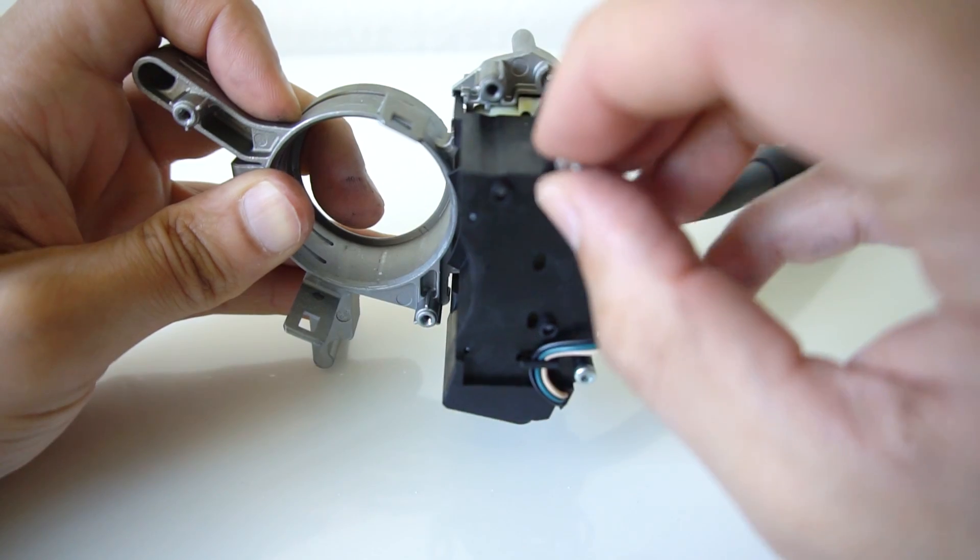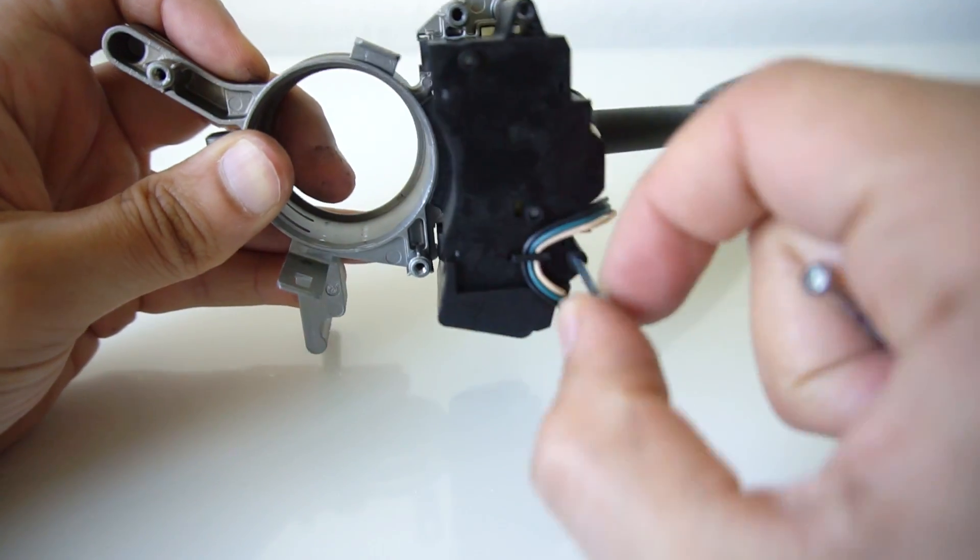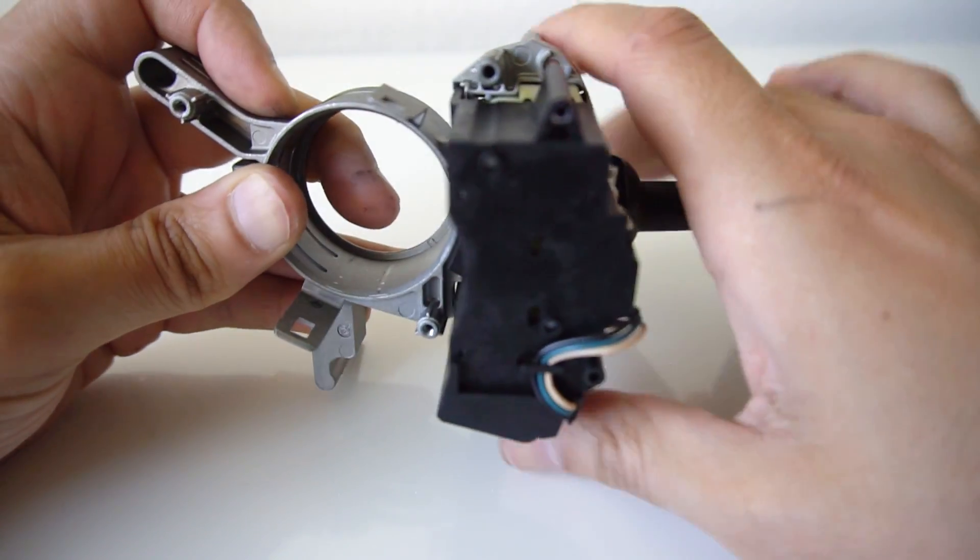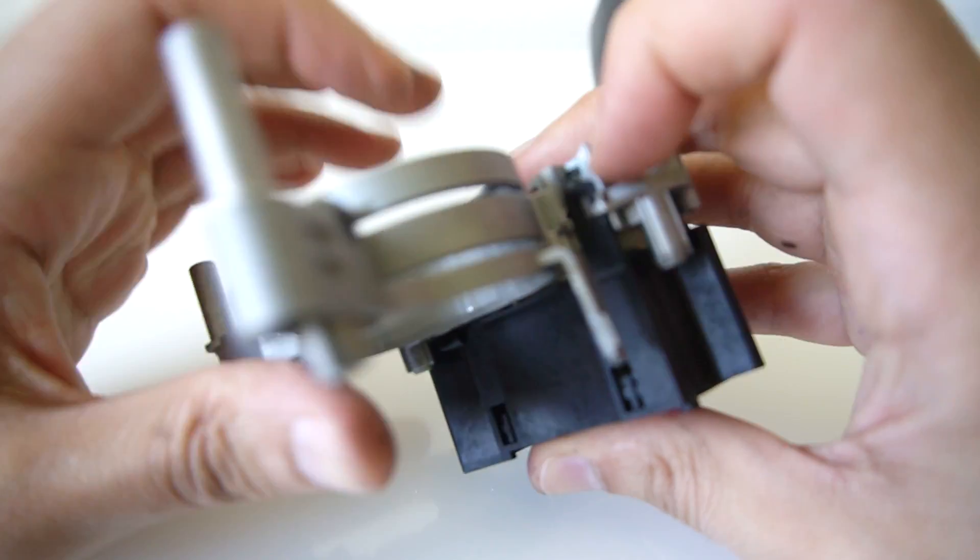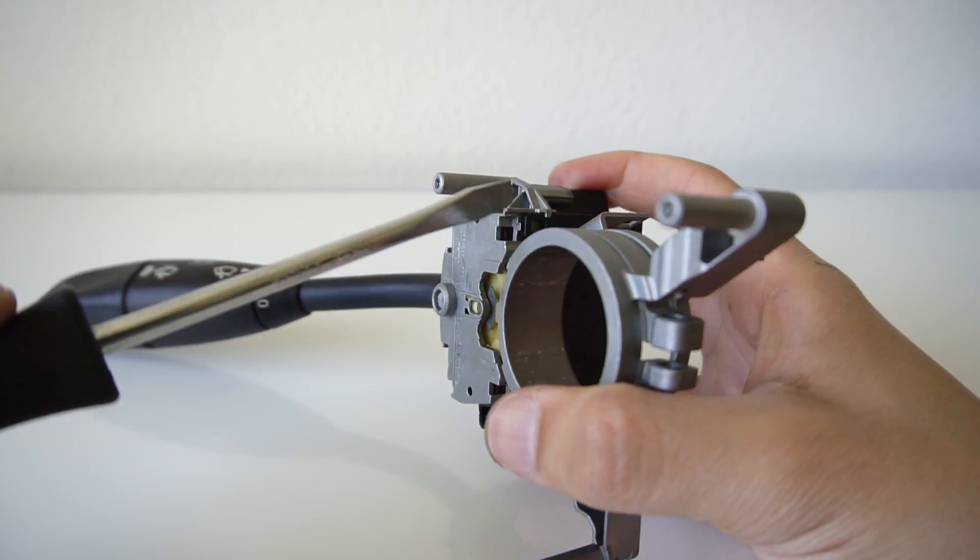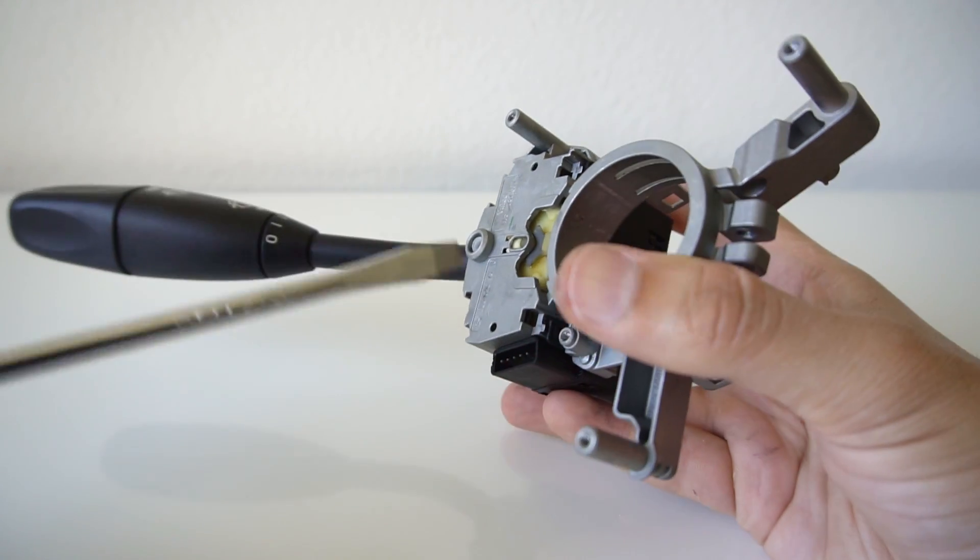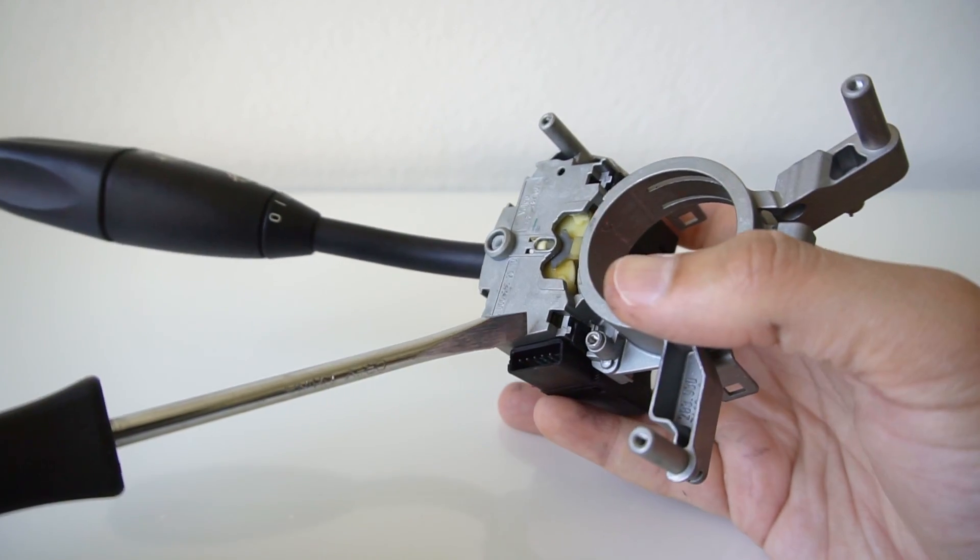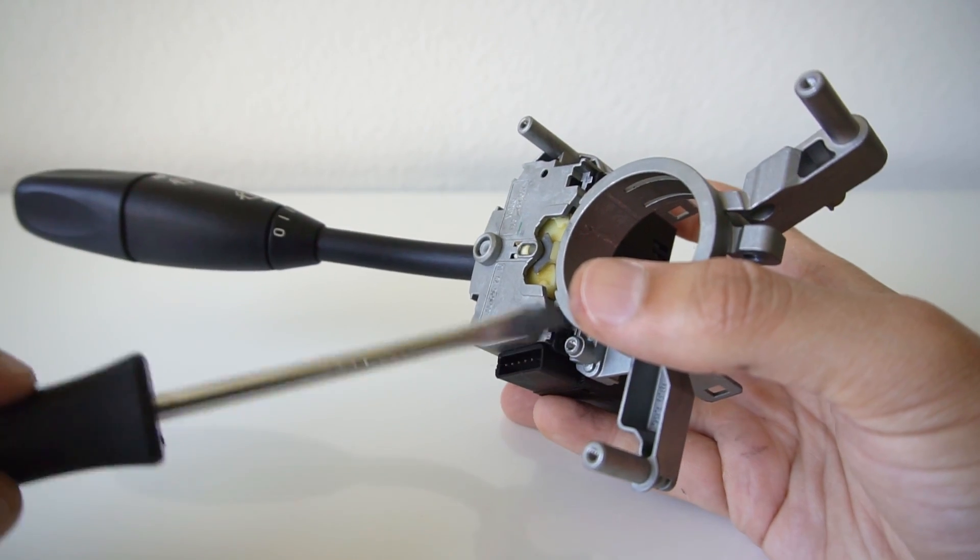So I removed these two screws and noticed it was still connected by two plastic clips which are attached also to the metal housing. I used a flathead screwdriver to unclip and slightly push back the clips. I was able to get it off without breaking or damaging the plastic.